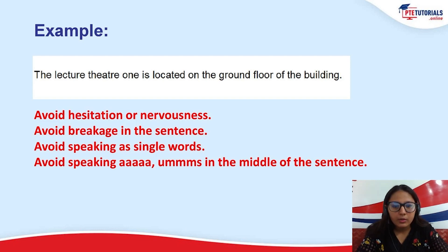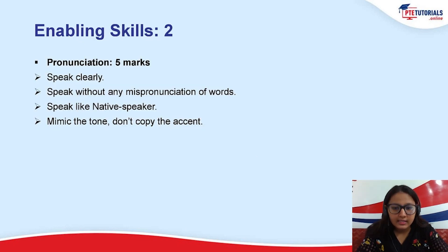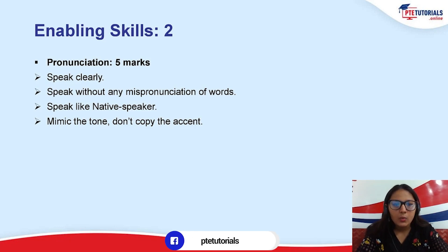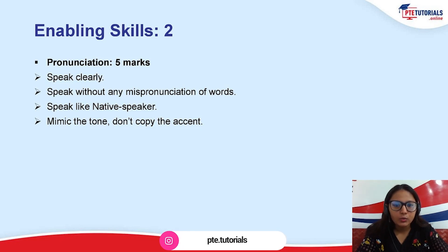Talking more about pronunciation, which is the next enabling skill — the first enabling skill was fluency, which we just analyzed. If we try to speak fluently like a native speaker, smoothly and clearly, without breaking sentences, without speaking umms or hesitating, speaking a bit confidently, then we can get a good score towards fluency. Otherwise, we will get a low score in fluency only, not towards pronunciation or content, because each enabling skill is analyzed differently. Don't mix them all.